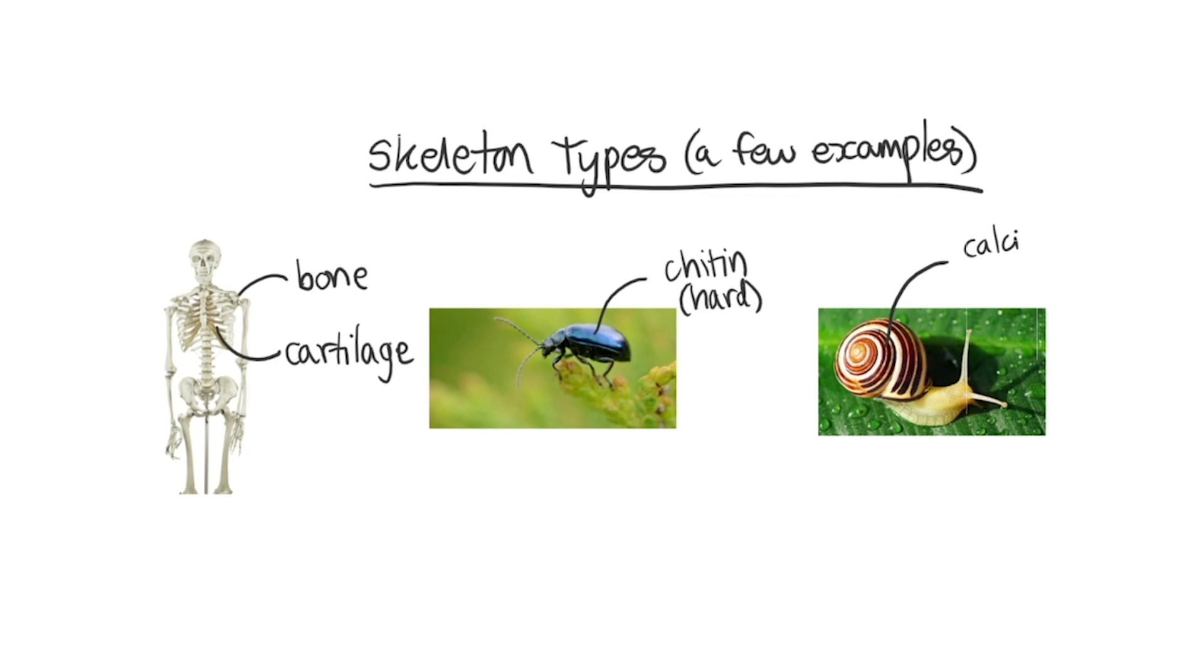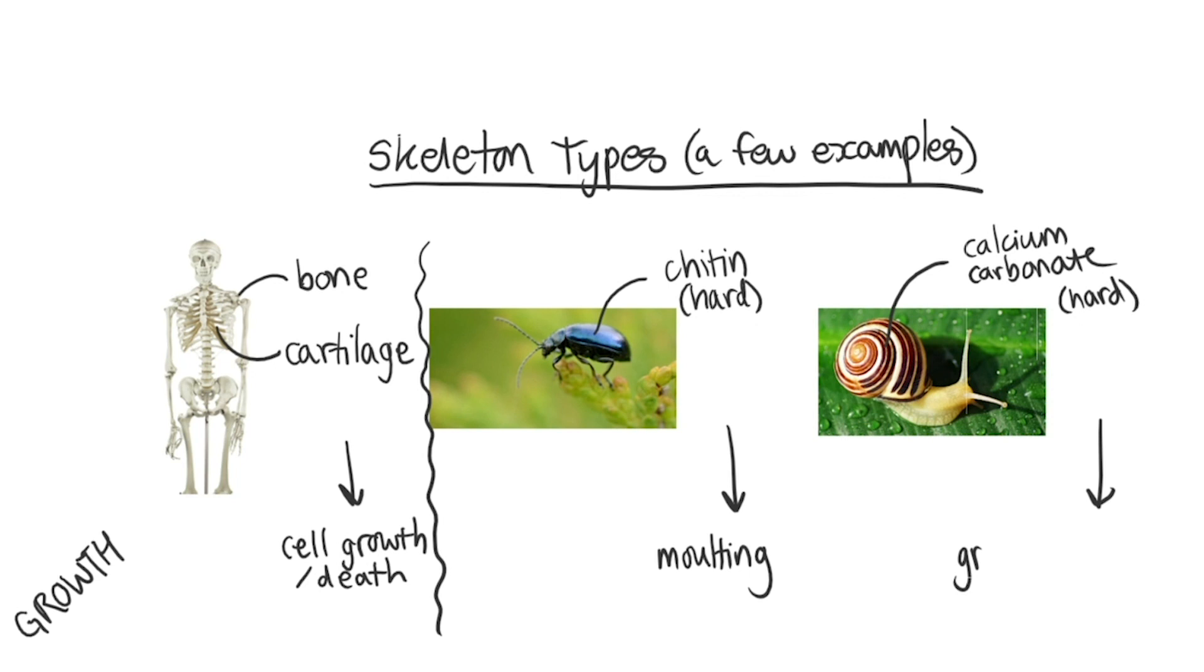One big difference between the skeletons of insects and snails is the way that they grow. Human bone has cells that can grow and change shape but a skeleton without living cells can't, limiting the growth of the soft body and meaning different solutions are needed. In the insect, the external skeleton is molted or shed periodically as the animal grows. You can think of how snakes shed their skin while the snail's shell is grown only at the edges in a spiral pattern so that it doesn't grow right into the body itself.